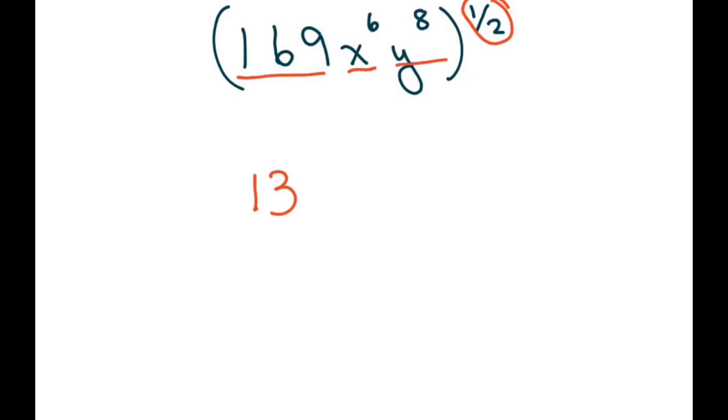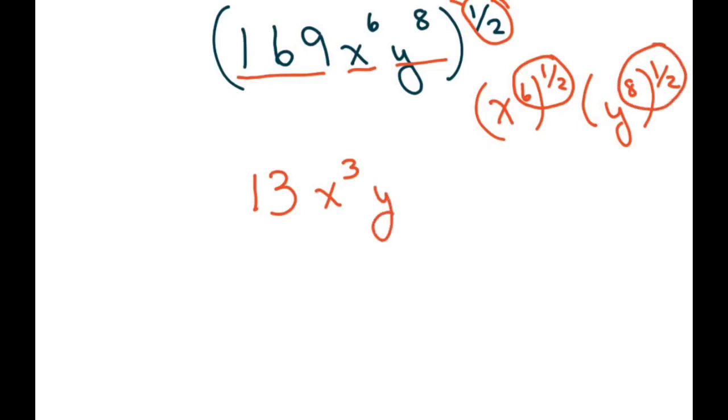Now we've got to take these two pieces. So we have x⁶^(1/2) and this one is y⁸^(1/2). It's kind of like distributing here. So you multiply those two. 1/2 of 6 is 3, and do these two, 1/2 of 8 is 4.